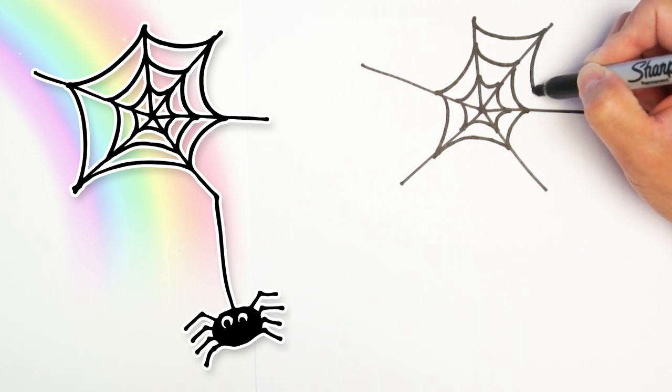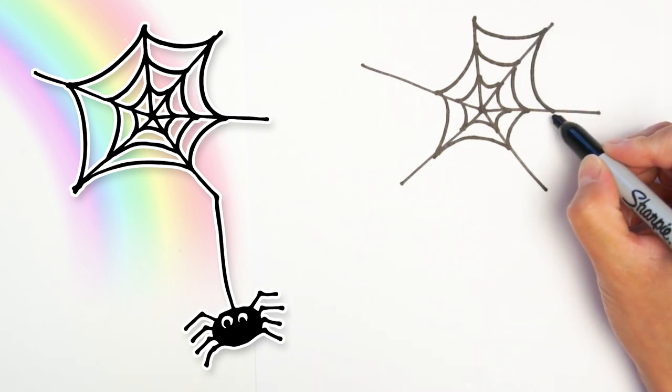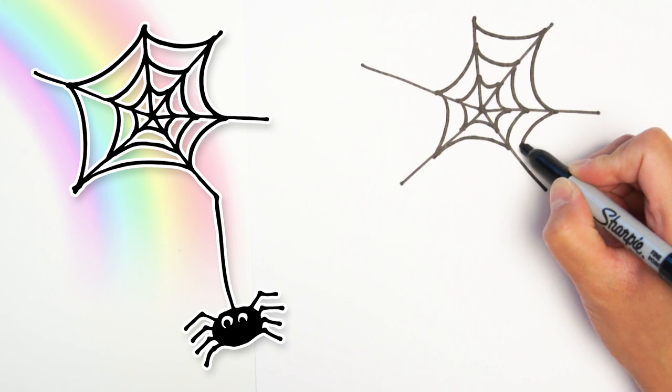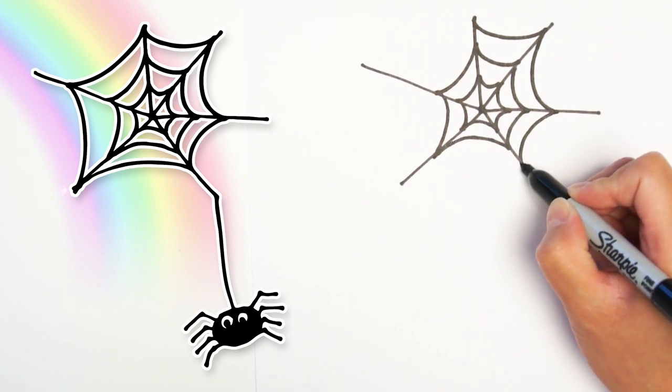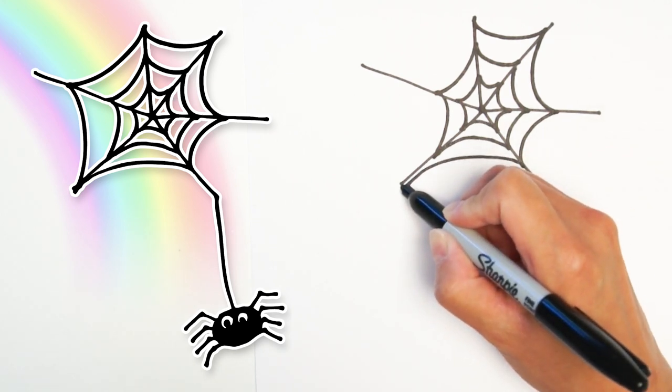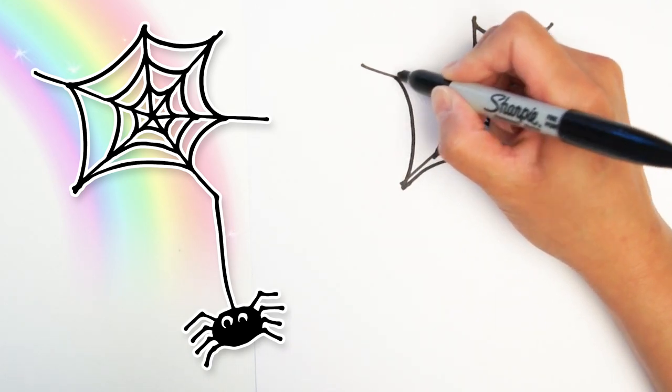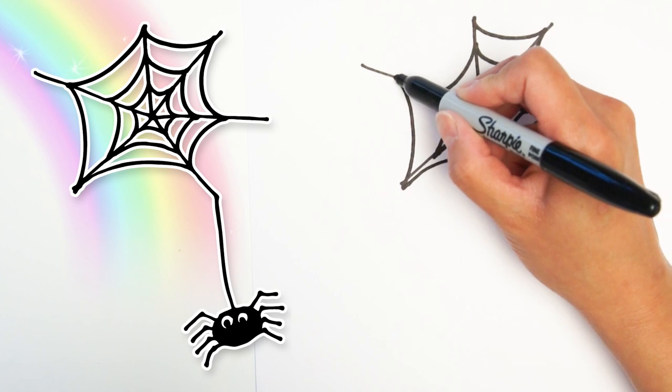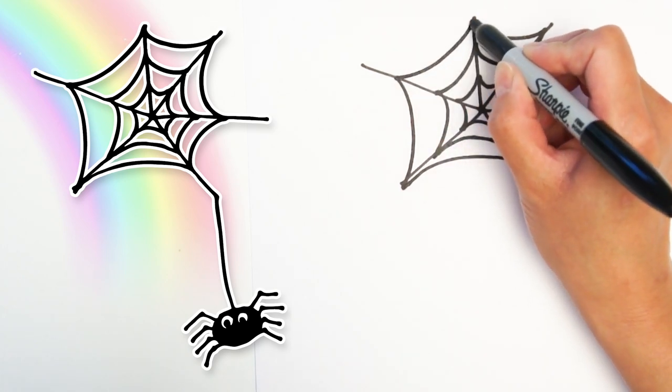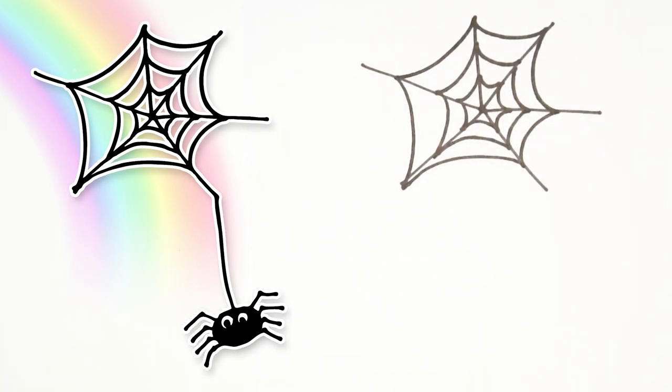Keep going. Let's start drawing another layer, curve lines going from each line to the next. It doesn't have to be perfect because spider webs are not super perfect. Sometimes they're a little bit messy. All right, great.